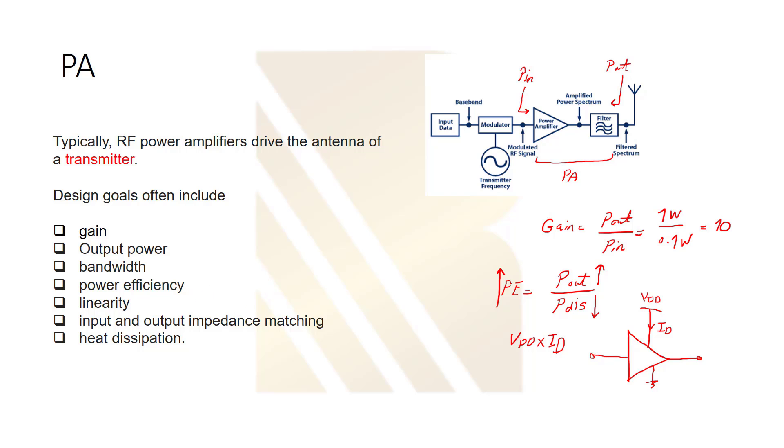The other goals are linearity, which we will talk about linearity in upcoming sections. Input and output impedance matching. Again, it will be discussed. And heat dissipation is also related to dissipated power. If we have a high power dissipation, we will have a high heat. And, you know, high temperature means that we won't have a robust design. So, we have to be careful about this.